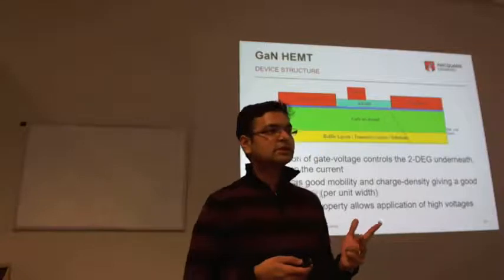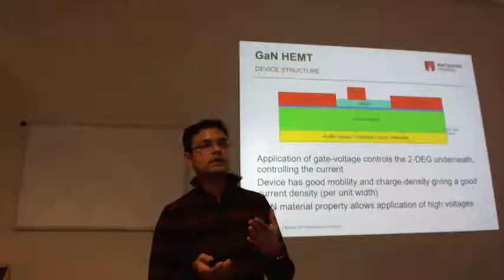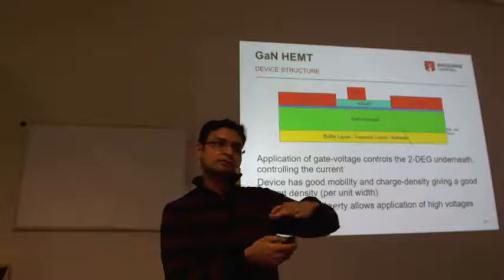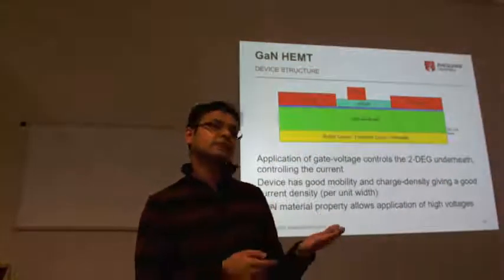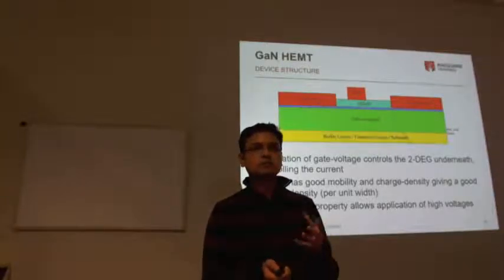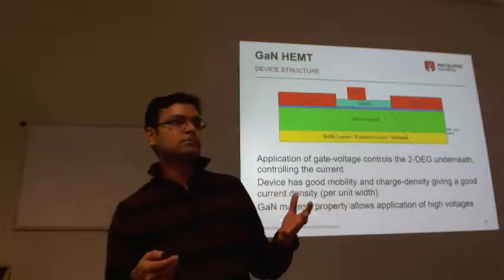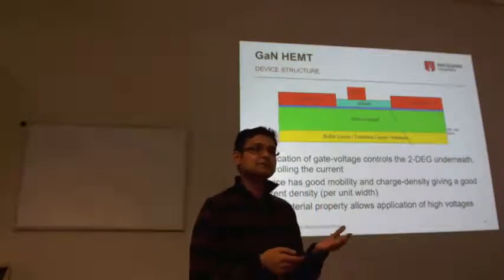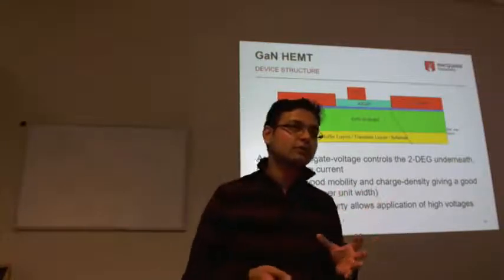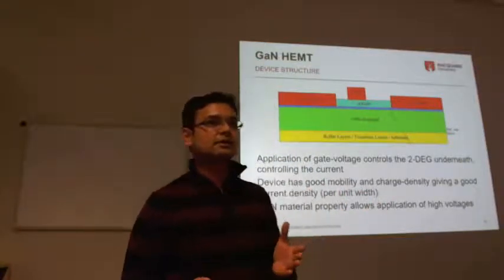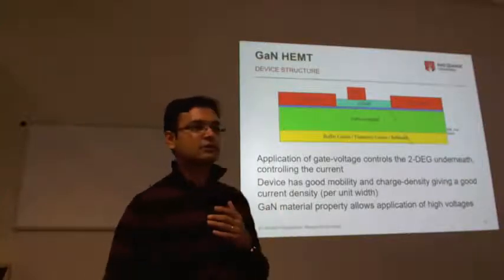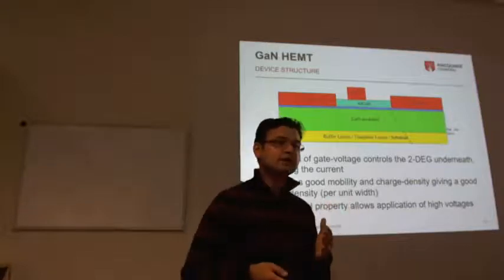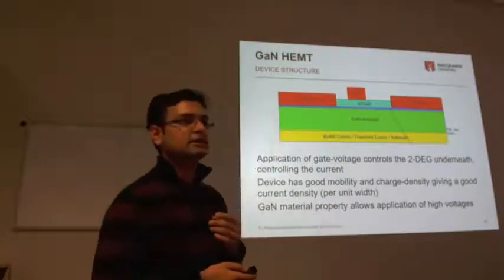For RF transistors it is silicon carbide, which has better lattice matching with gallium nitride, so growing GaN on SiC gives better quality. However, silicon carbide is expensive compared to silicon. For RF transistors used in cell phones, the higher cost is acceptable. But for power converters, cost is a big factor, so they use silicon substrate instead. That is one key difference between GaN RF and GaN power devices: substrate is typically silicon carbide versus silicon.